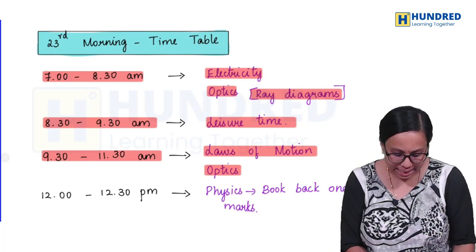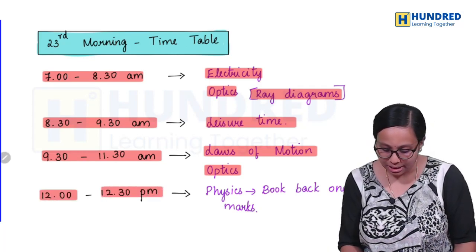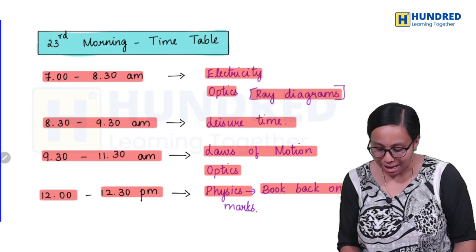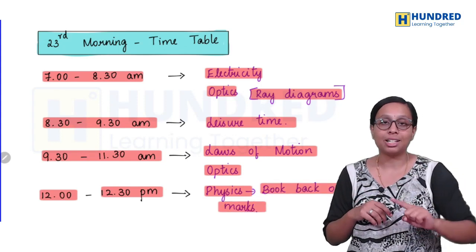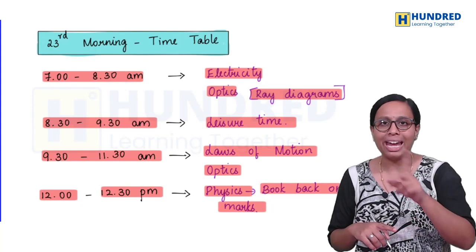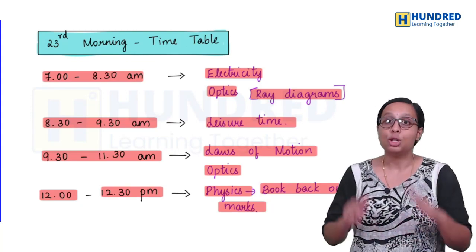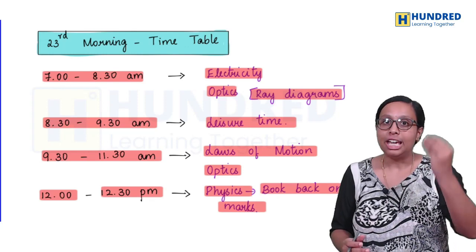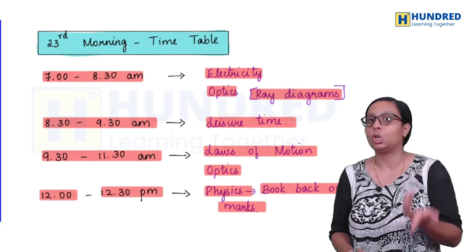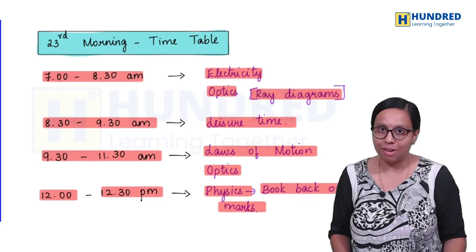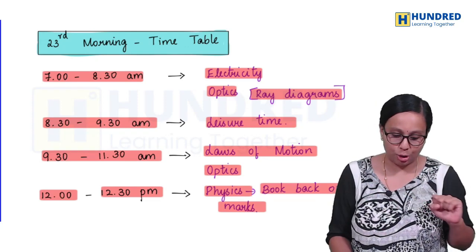After a short break, 12 to 12:30, physics book back one marks. Book back one marks, maximum questions, 8 to 10 questions are from book back. So book back is the priority. If you have time, concentrate on internal questions also. Now we will finish physics.